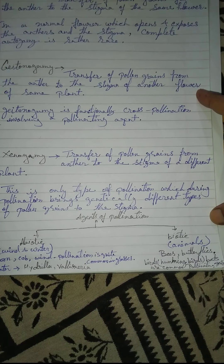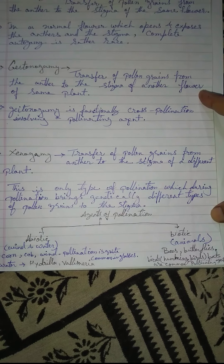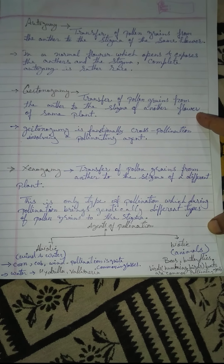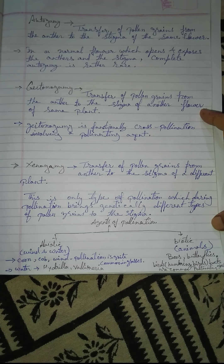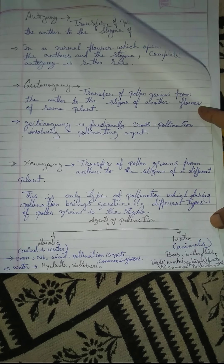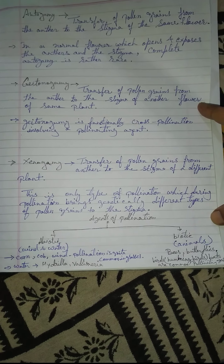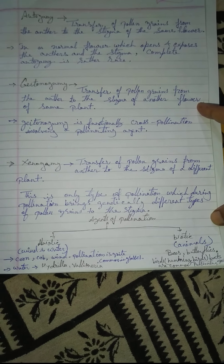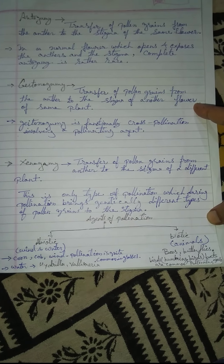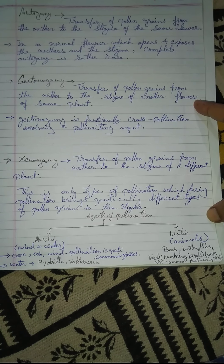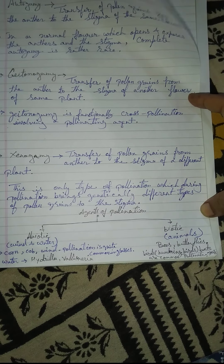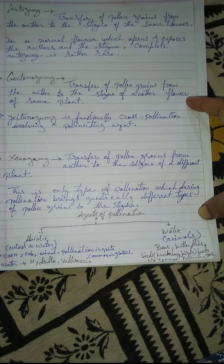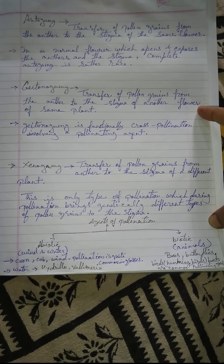Agents of pollination are of two types: abiotic and biotic. Abiotic agents include wind and water — for example, wind pollination is quite common in grasses, and water pollination occurs in plants like Hydrilla and Vallisneria. Biotic agents include animals such as bees, butterflies, birds, hummingbirds, sunbirds, bats, lizards, and reptiles.